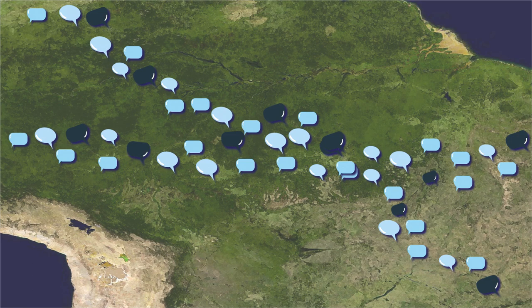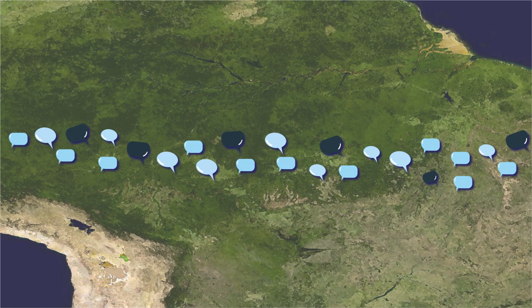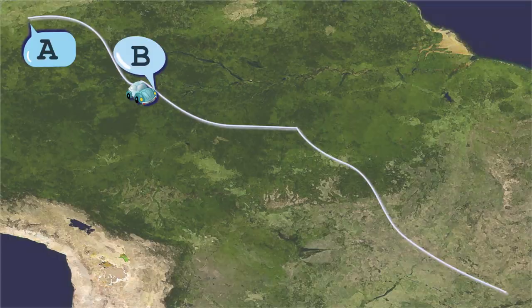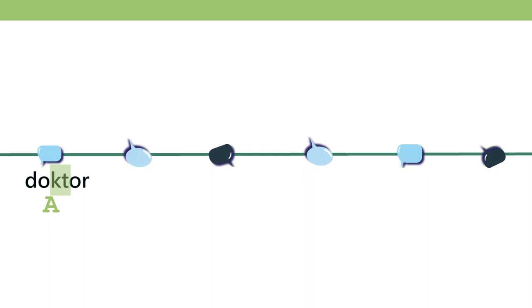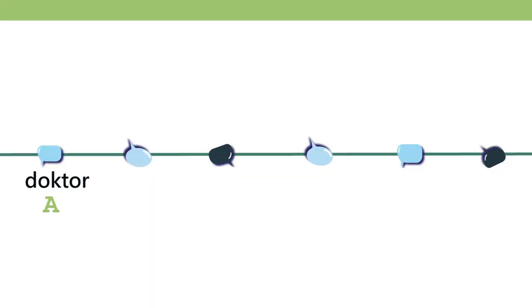Moving from south to north, you see the language gradually changes. In the north, dialect A has the word pronounced something like 'doctor.' Moving south to dialect B, the two voiceless consonants K and T become voiced, so 'doctor' becomes 'dogthor.' If you live in the dialect A area but travel to dialect B, you'll still understand them — it's just one phonetic feature changing from voiceless to voiced.